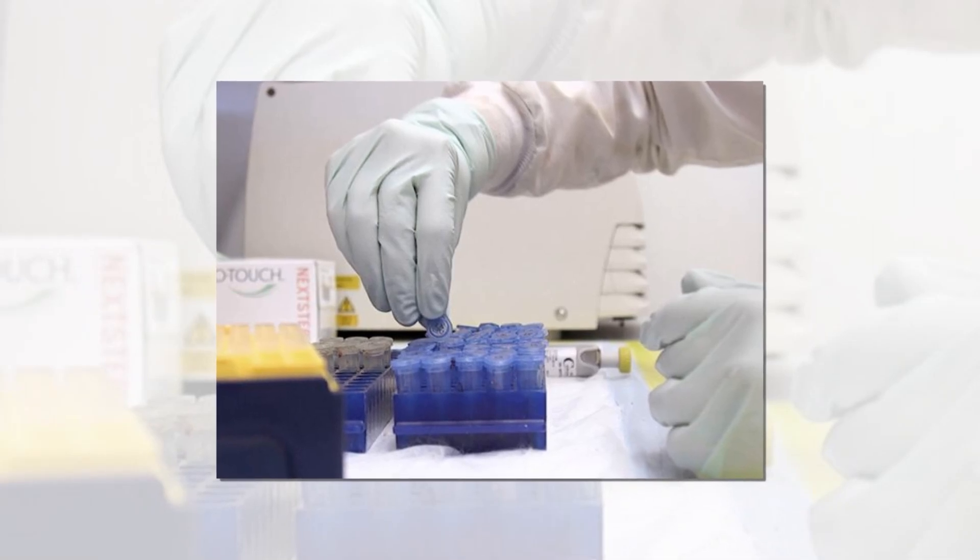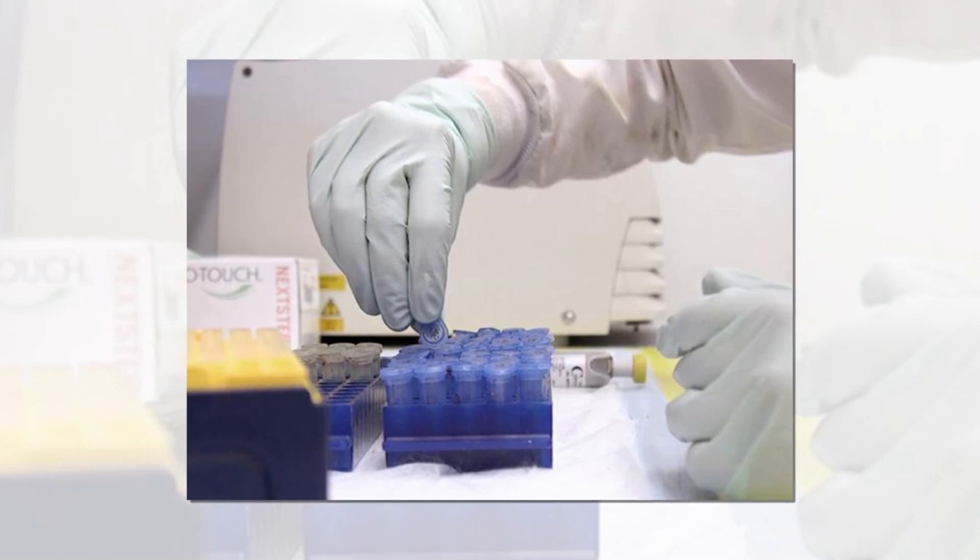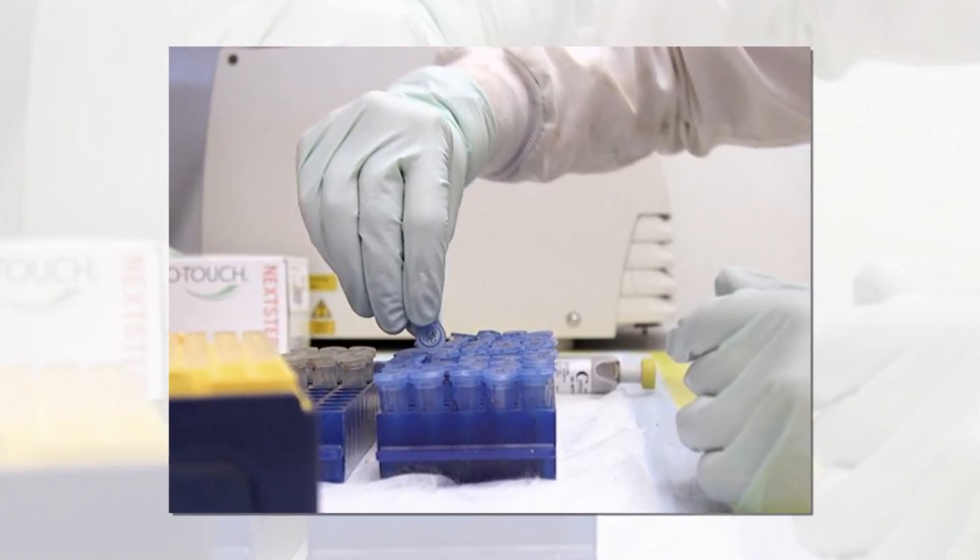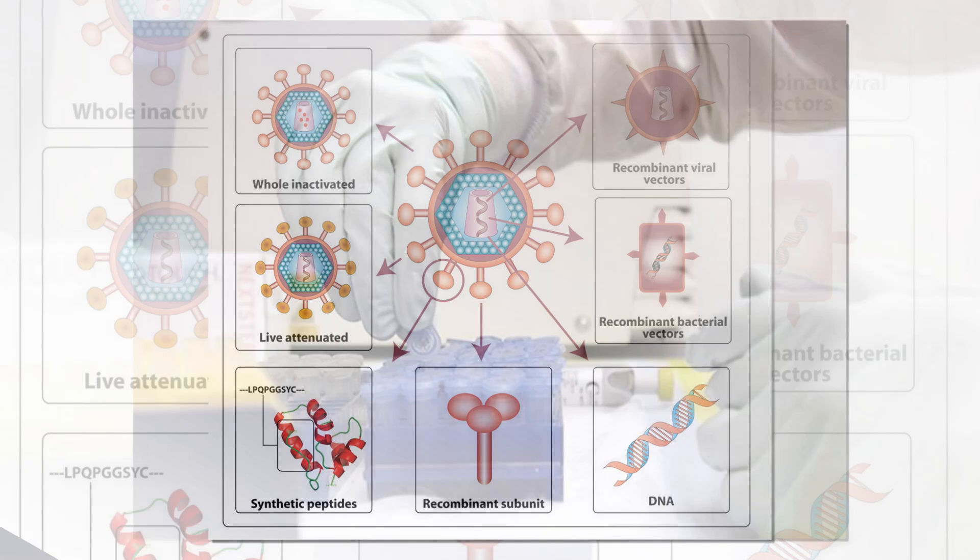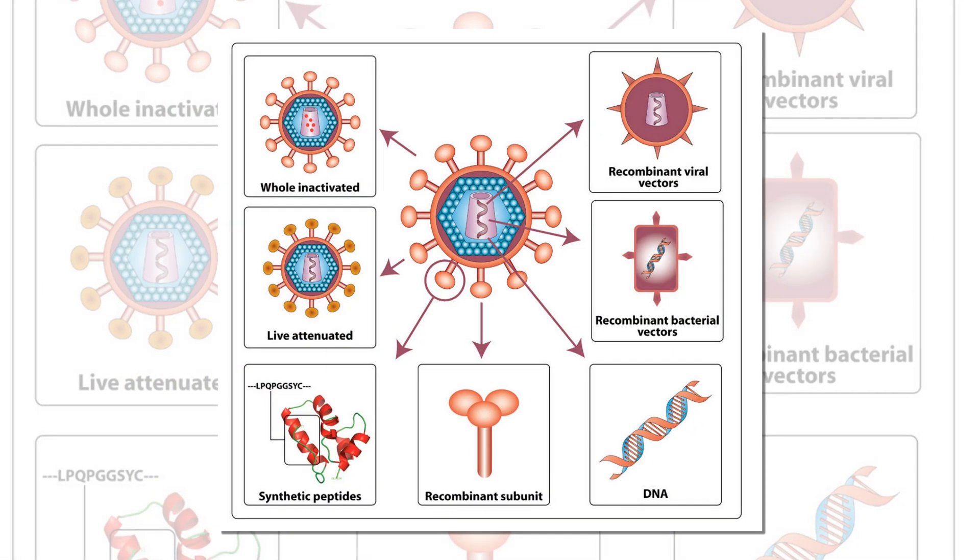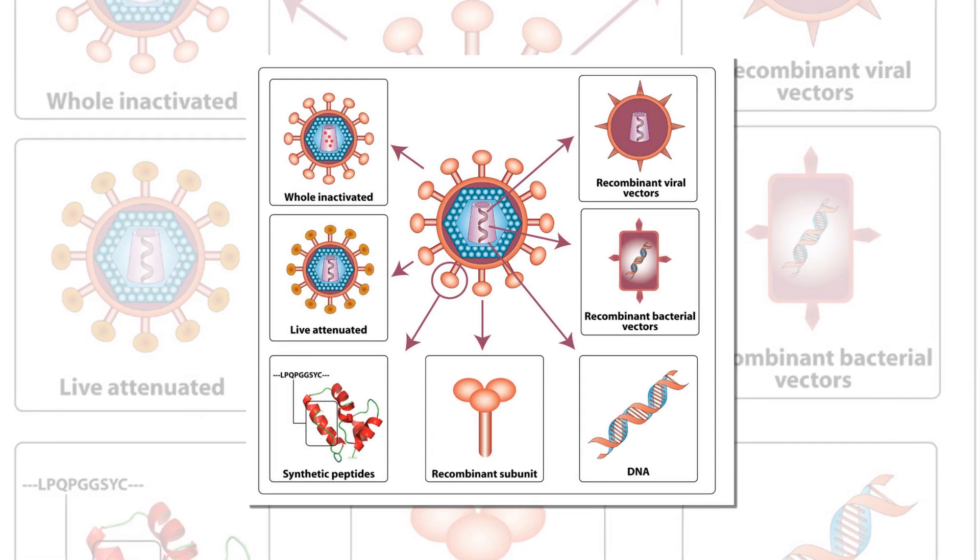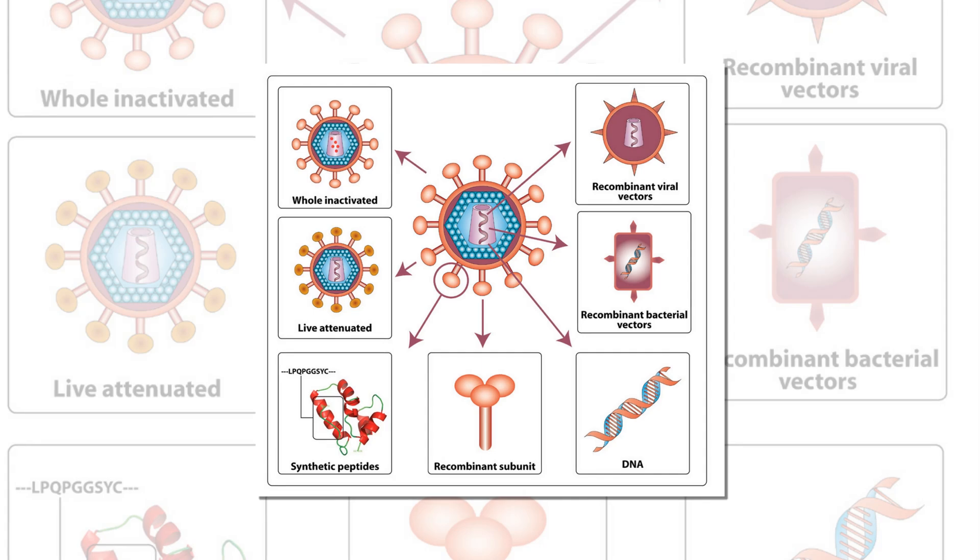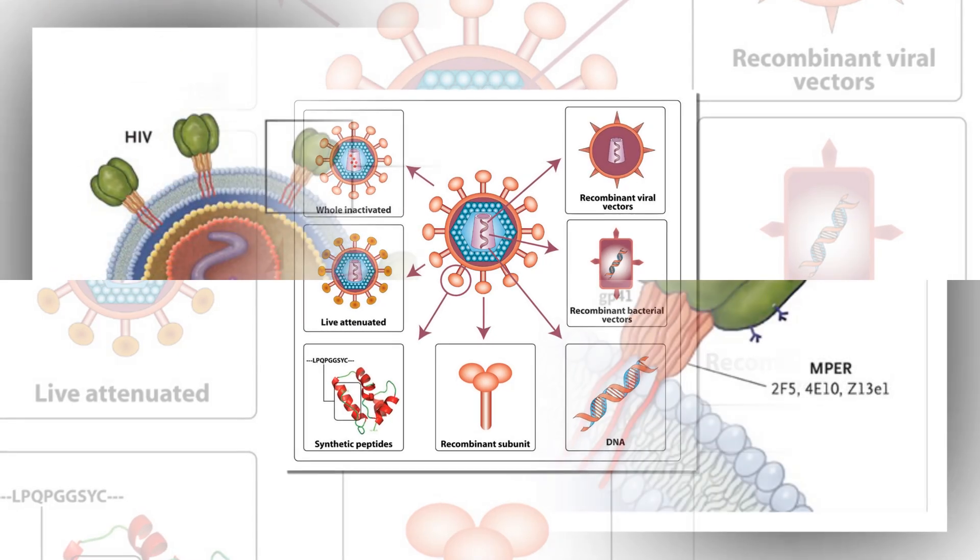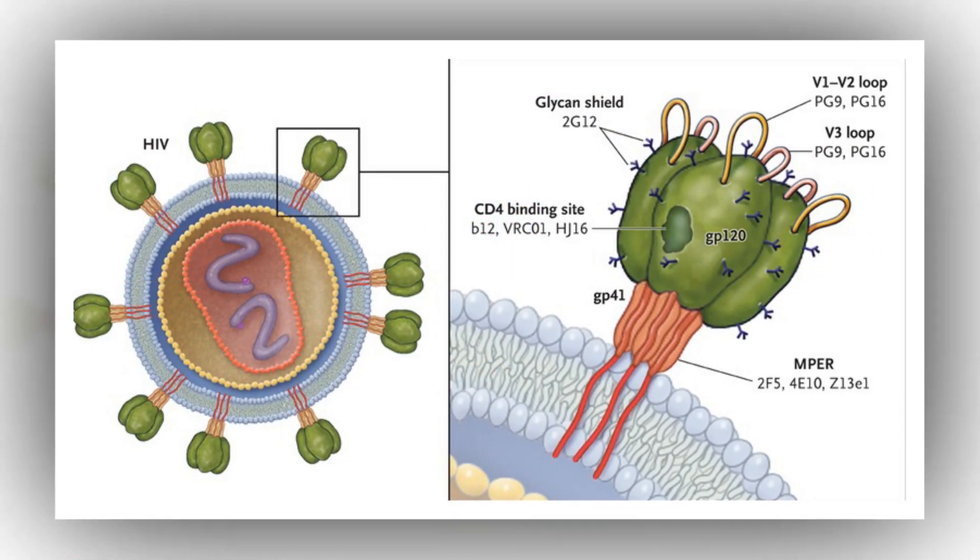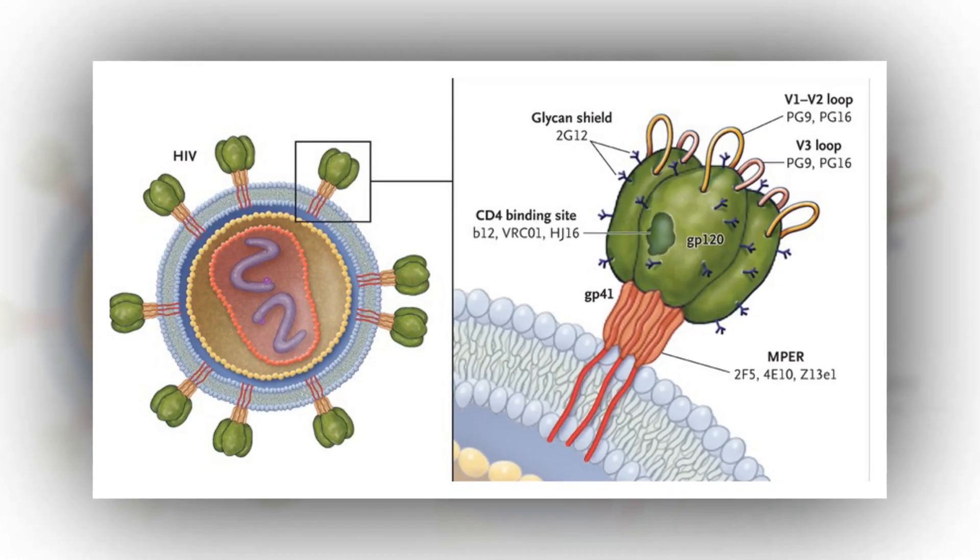Meanwhile, researchers at the Duke Human Vaccine Institute reported on another vaccine candidate that targets a usually hidden part of HIV's envelope that remains stable as the virus evolves. As HIV's envelope proteins break apart in preparation for cell entry, the gp41 membrane proximal external region (MPER) is briefly exposed. The HIV Vaccine Trials Network's HVTN-133 trial evaluated an engineered immunogen consisting of peptides in a lipid nanoparticle designed to train B cells to generate bnAbs that recognize and block MPER.